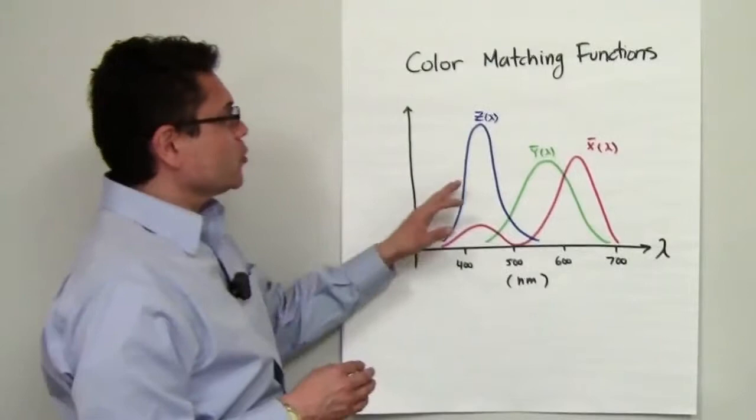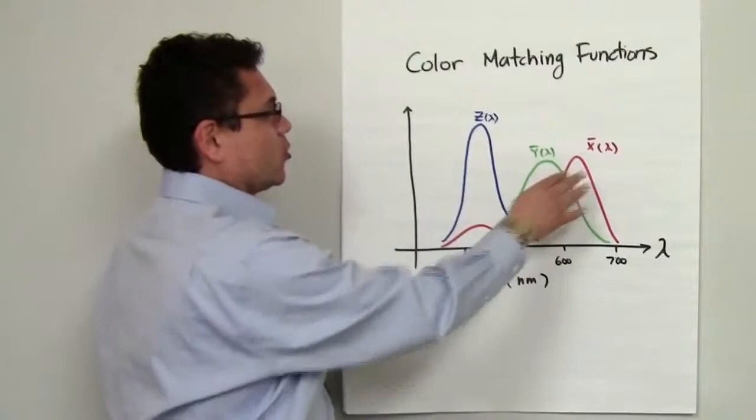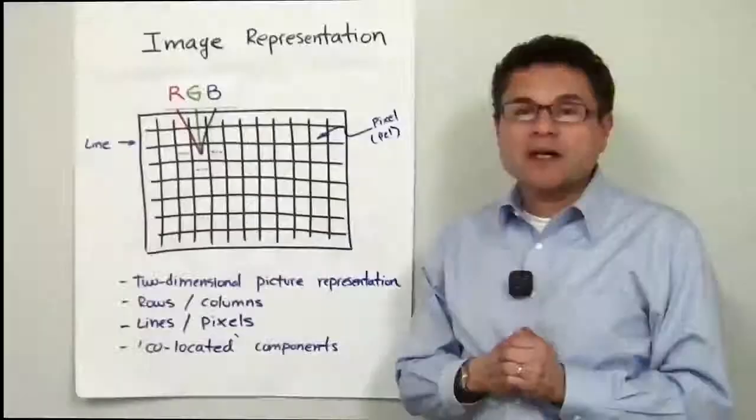Here, for instance, you could see very easily that it requires a lot more power to represent blue colors than it takes to represent green or red. This will be very important when we talk later about image representation and especially subsampling of images.